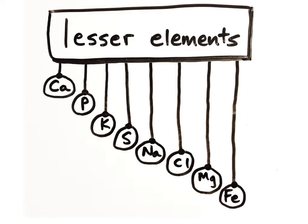There are eight other elements called the lesser elements, which collectively make up 3.6% of the body's mass. The lesser elements are calcium, having the symbol CA, phosphorus P, potassium K, sulfur S, sodium NA, chlorine CL, magnesium MG, and iron FE.